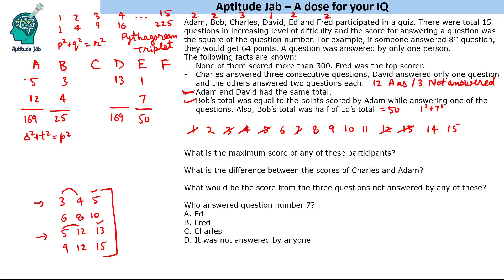Charles answered three consecutive questions, so these could be 8, 9, 10 or 9, 10, 11—two possibilities. If we say 8, 9, 10, the total will be 64 + 81 + 100 = 245.